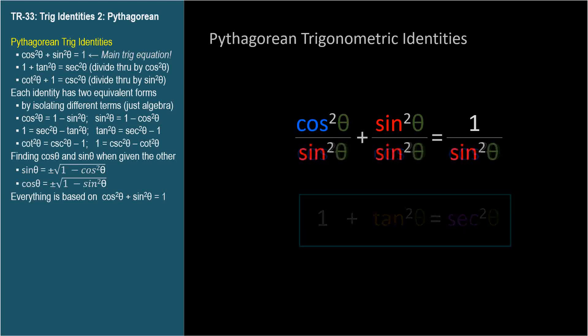We can find the third by dividing the first by sine squared theta instead of cosine squared theta. We get cosine squared theta over sine squared theta plus sine squared theta over sine squared theta equals 1 over sine squared theta. The first term is the reciprocal of tangent squared theta, so cotangent squared theta. The second term reduces to 1, and the rightmost term is cosecant squared theta.